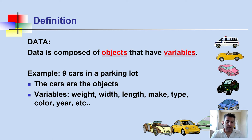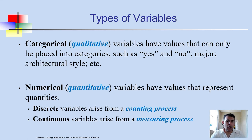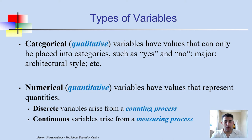Variables are called variables because they change. For instance, one car's weight might be 1.80 tons, the next might be 3 tons, and another 2.5 tons, and so on. We have two kinds of variables. First, categorical variables — also called qualitative variables — have values that can only be placed into categories, such as yes or no, good or bad, rural or urban, architectural style, and so on.